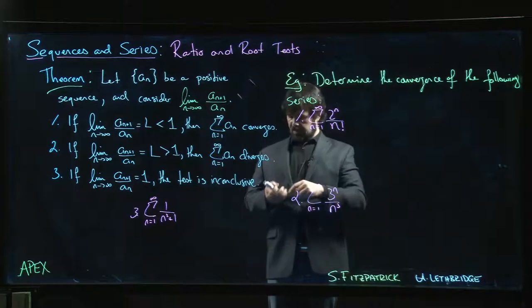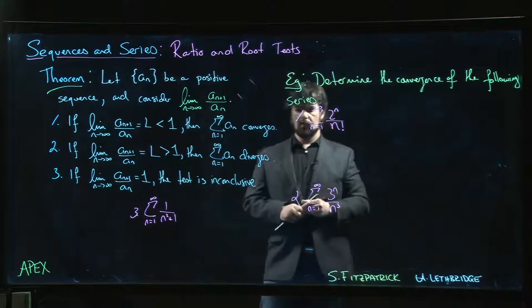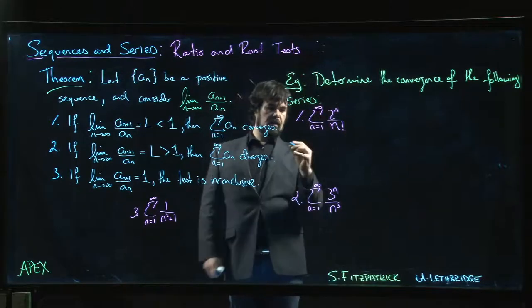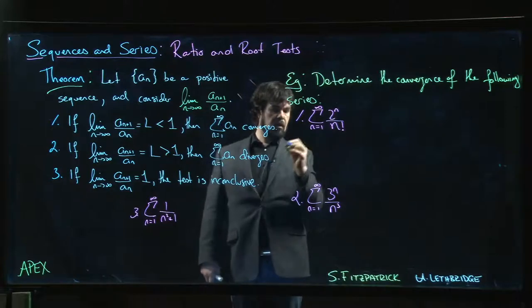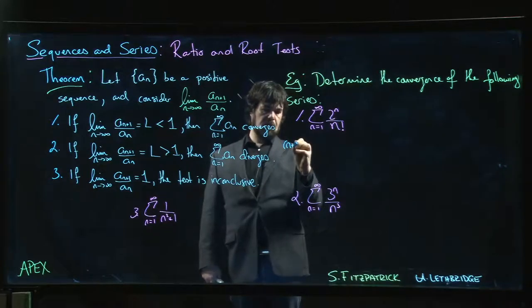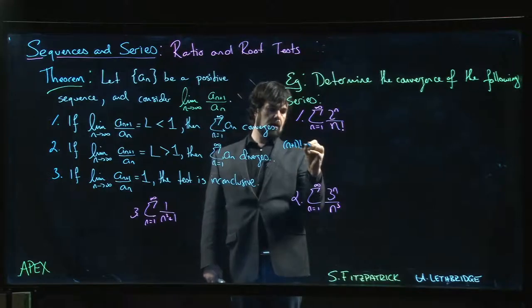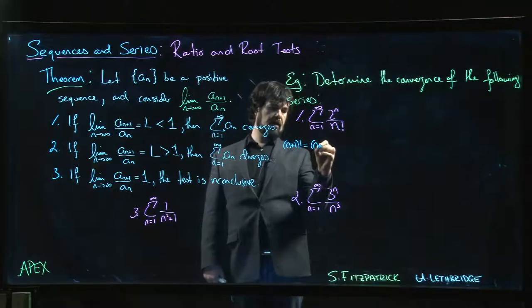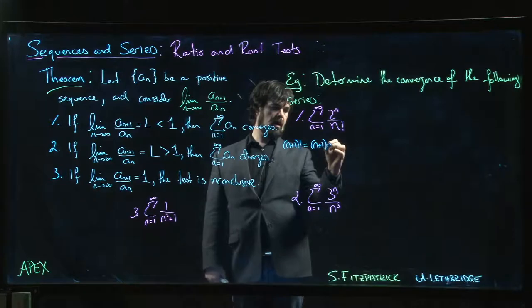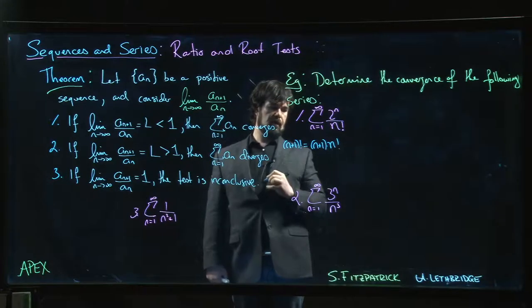For factorials, the reason why the ratio test works really well for factorials is you might recall that the factorial can be defined sort of recursively. n plus one factorial can be written as n plus one times n factorial.